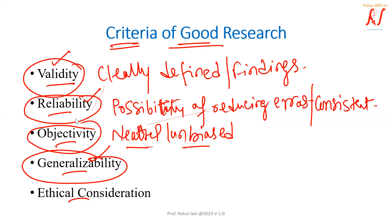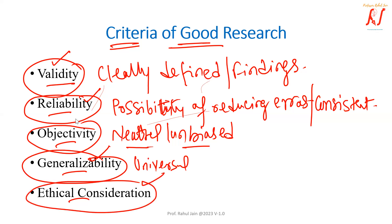When we talk about generalizability, it means that the findings should be universal. The results should not be applicable only to a very small group of participants, but should be as wide as possible. There are also ethical considerations, meaning the research should be conducted in an ethical manner to protect the rights and well-being of the participants.